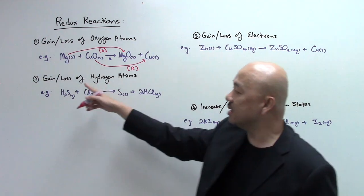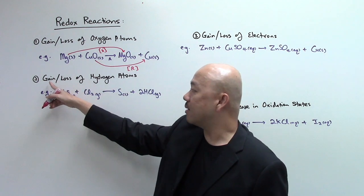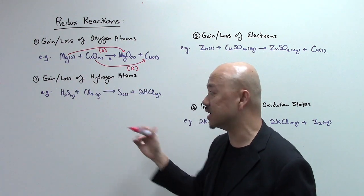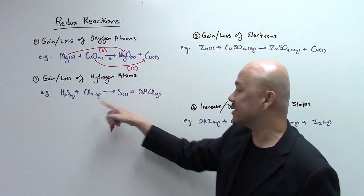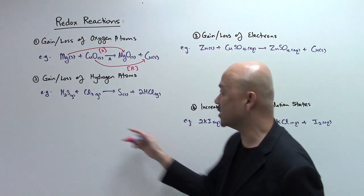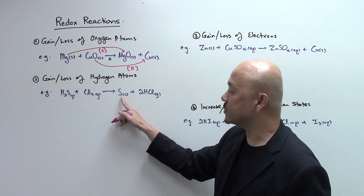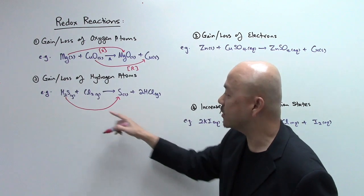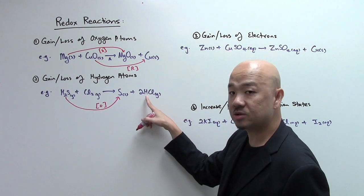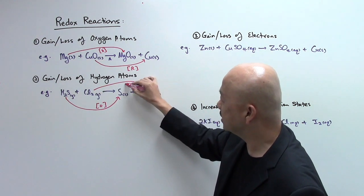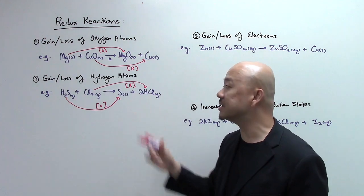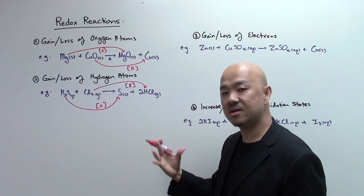The second method is the gain or loss of hydrogen atoms. In this case, the gain of hydrogen atoms will be known as reduction, whereas the loss of hydrogen atoms will be known as oxidation — it's kind of opposite to that of oxygen atoms. The example here is hydrogen sulfide H₂S plus chlorine gas gives you sulfur and hydrogen chloride. H₂S loses hydrogen atoms to become sulfur, so this is oxidation, whereby chlorine gains hydrogen atoms to form hydrogen chloride, so this is reduction. Since oxidation and reduction occur simultaneously, this is a redox reaction.